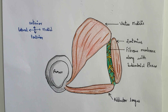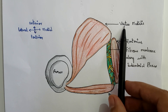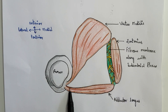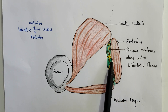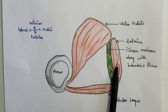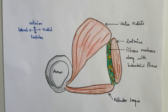Let us review the boundaries once more. The anterolateral boundary is formed by the vastus medialis. The posteromedial boundary is formed by adductor longus above and adductor magnus below. The medial boundary or roof is formed of two structures: the sartorius muscle and the fibrous membrane embedded with the subsartorial plexus.